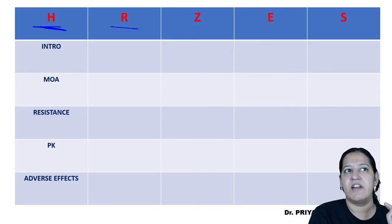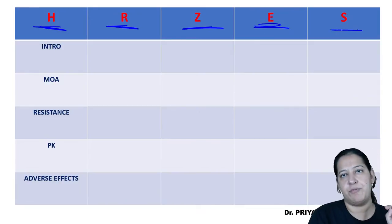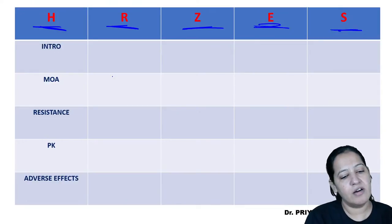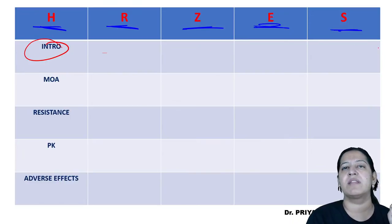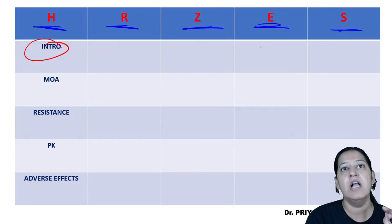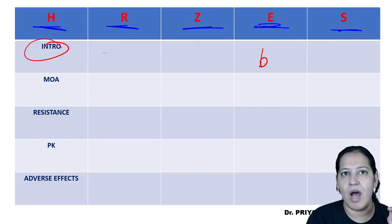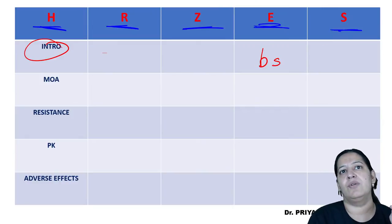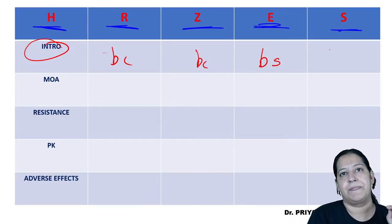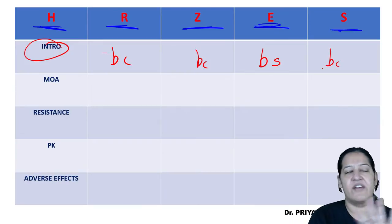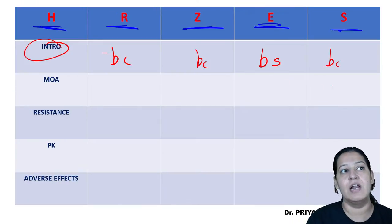The five drugs are isoniazid, rifamycin, pyrazinamide, ethambutol, and streptomycin. In our comparison, we identified which drug is bactericidal and which is bacteriostatic. Only ethambutol is bacteriostatic; all the rest are bactericidal — they kill the bacteria.